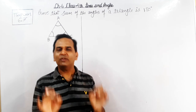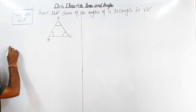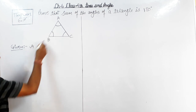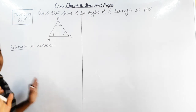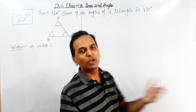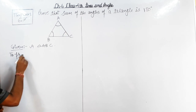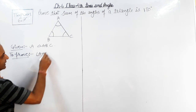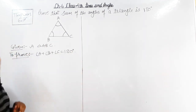बहुत ध्यान से देखिएगा — बहुत छोटी और बहुत simple theorem है। Given में आपको क्या mention करना है: a triangle ABC is given. To prove में हमें mention करना होगा: sum of all the interior angles of this triangle equals 180 degrees, i.e., angle A plus angle B plus angle C equals 180 degrees। यह हमारा to prove बन गया।